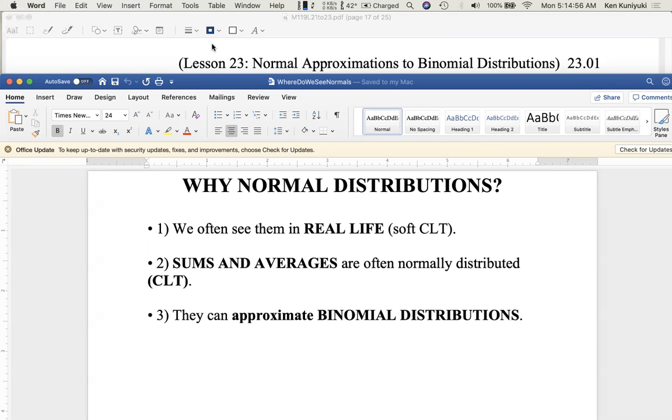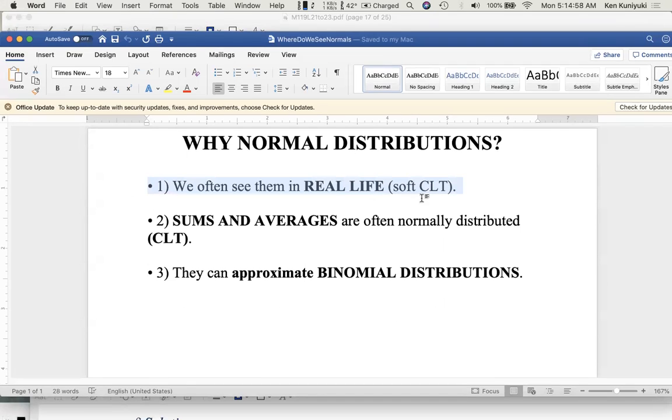First of all, we often see them in real life. This is sometimes referred to as the soft central limit theorem - the idea that if you have a variable, like weight or height, where there are many different sources or inputs, then they combine to form a random variable that has about a normal distribution.